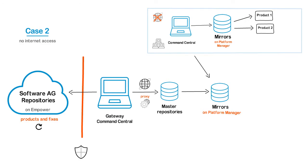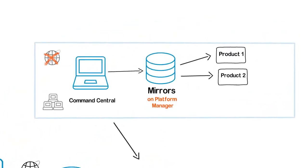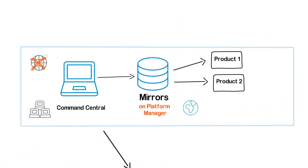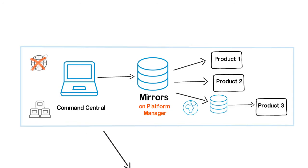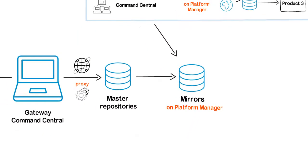If an environment is installed on a server that is geographically far away from the platform manager with the mirror repositories, you can create mirrors on the local platform manager installed on the distant server. Note that Command Central registers repositories over HTTP or HTTPS, depending on the ports that you have set, the version of the respective platform manager, and the repository type. You can find more details in the Command Central help.